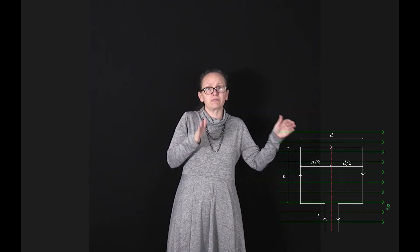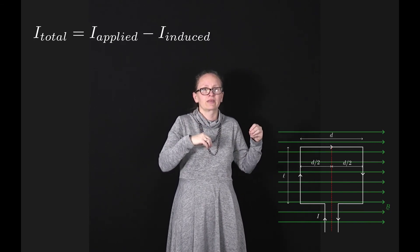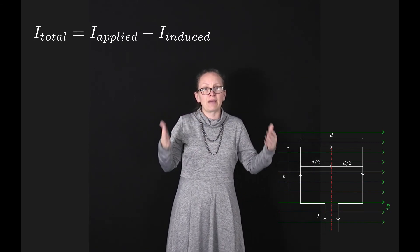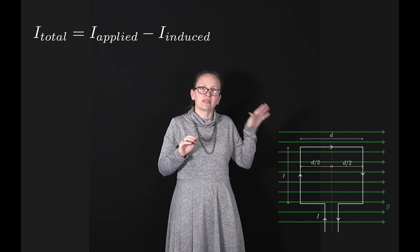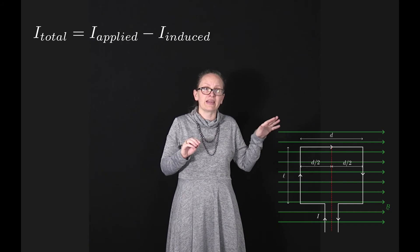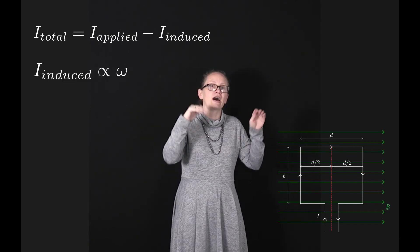This induced current is going to oppose the applied current and is known as a back EMF. The amount of current generated this way is proportional to the angular velocity of our loop.